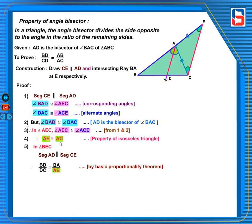In equation 1, AE is equal to AC. You replace AE as AC, therefore we get: BD upon DC is equal to BA upon AC from 4 and 5.